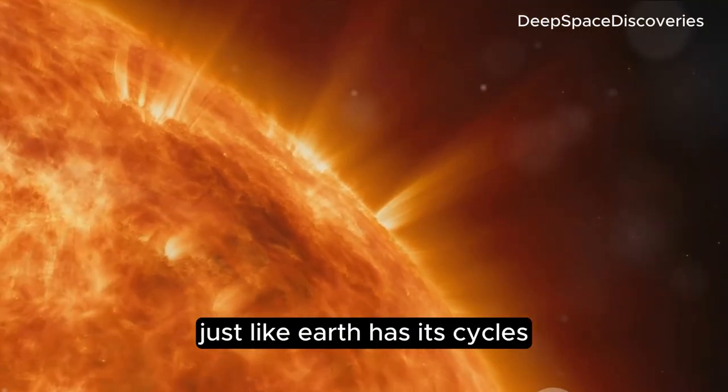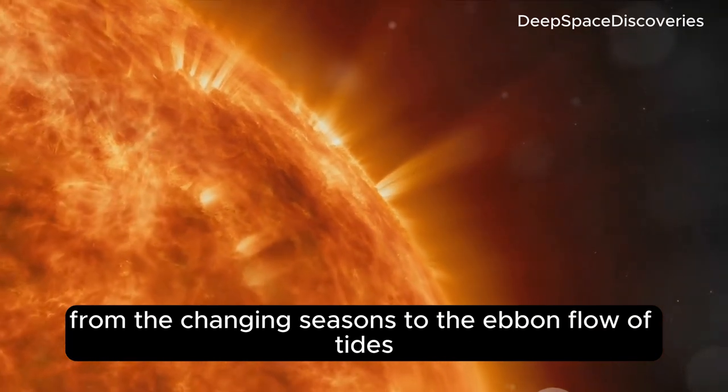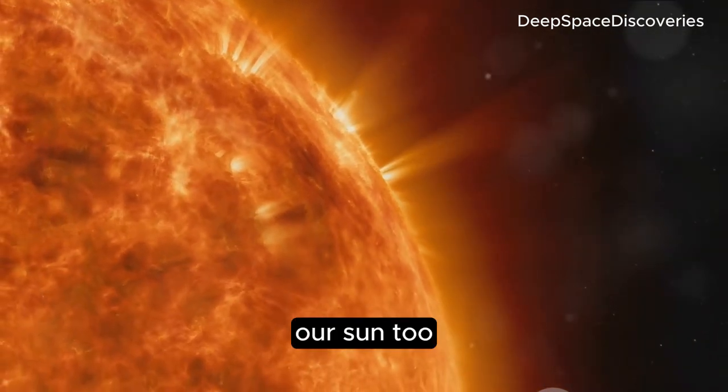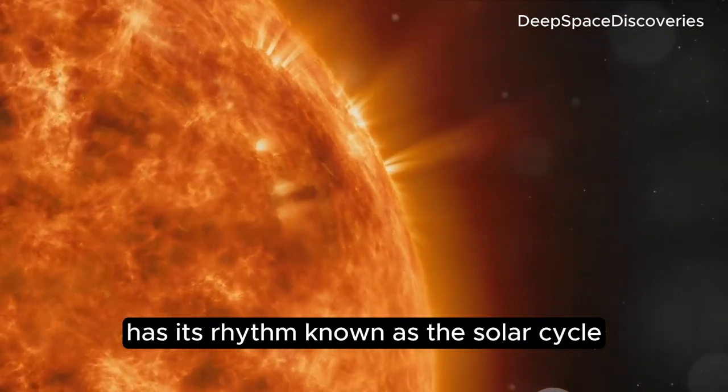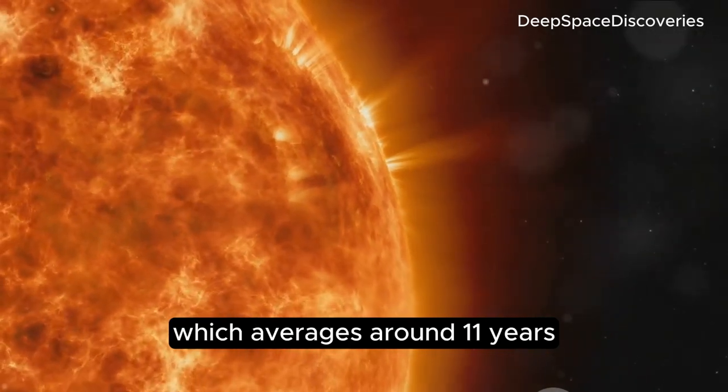Just like Earth has its cycles from the changing seasons to the ebb and flow of tides, our Sun, too, has its rhythm, known as the solar cycle, which averages around 11 years.